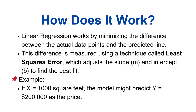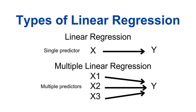For example, if X equals 1000 square feet, the model might predict Y equals $200,000 as the price. There are mainly two types of linear regression: simple linear regression, where there's only one independent variable (for example, predicting price based on square footage), and multiple linear regression, where there are two or more independent variables (for example, predicting price based on square footage, number of bedrooms, and location).